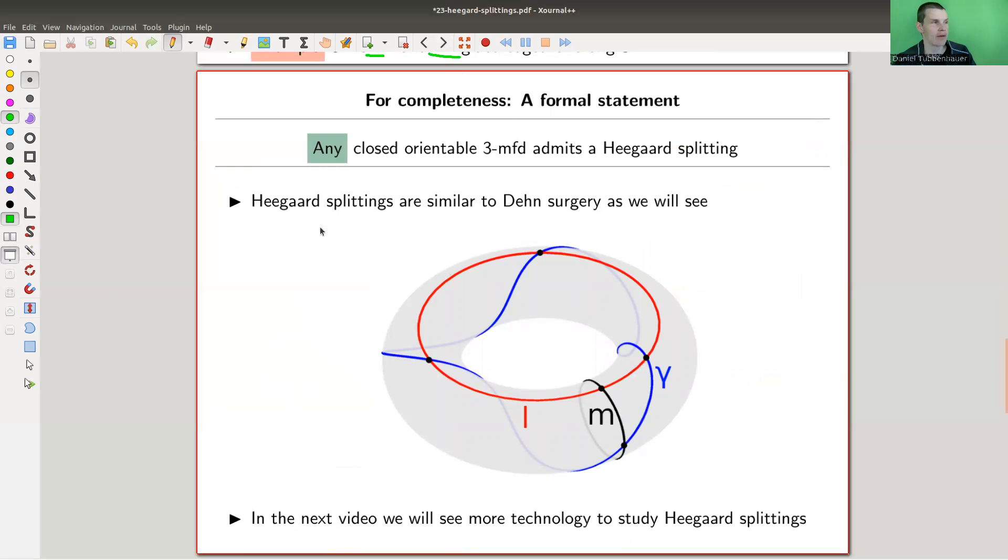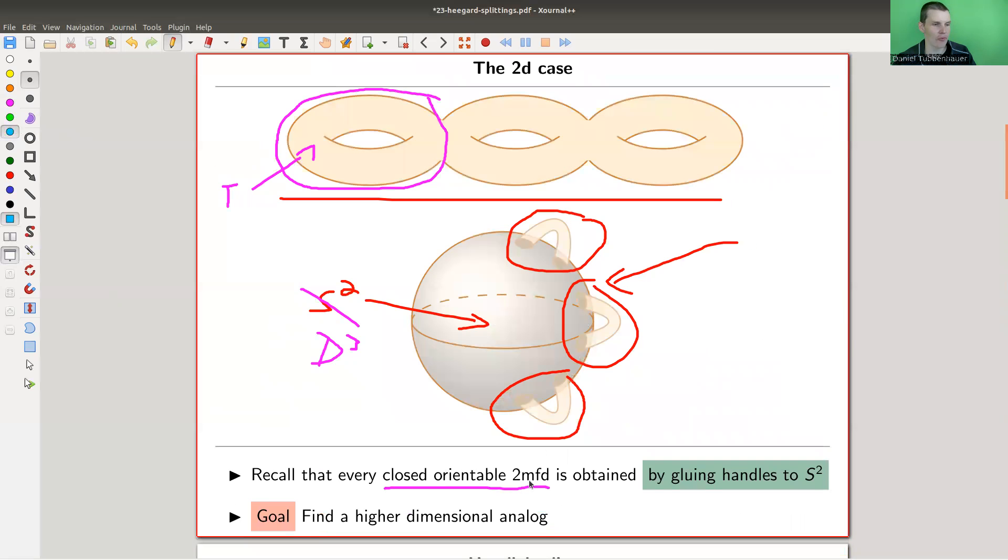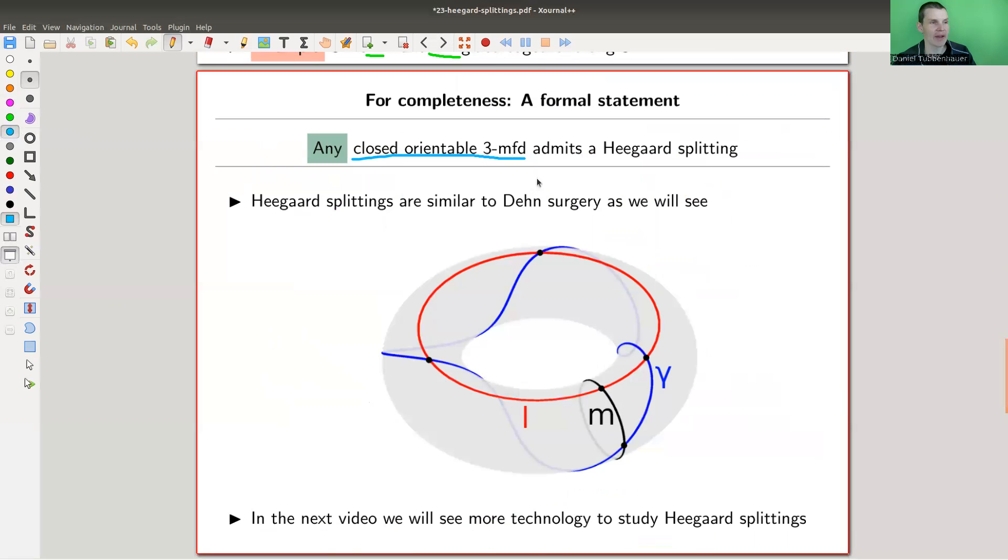And the point of Heegaard theorem is that this works for any of those beasts that we are hopefully reasonably familiar with by now. It's kind of a generalization of the two dimensional case, closed orientable two manifolds to closed orientable three manifolds. And they admit a Heegaard splitting, so you can always split them into two easy pieces, and the whole complexity is in the gluing or along the boundary.